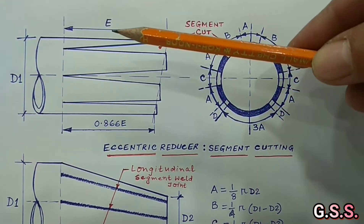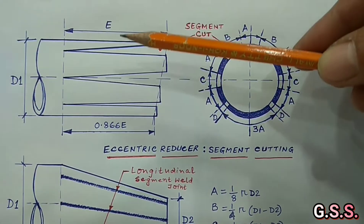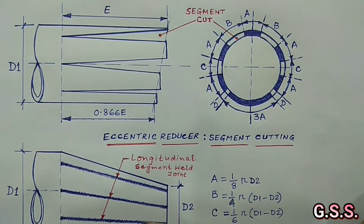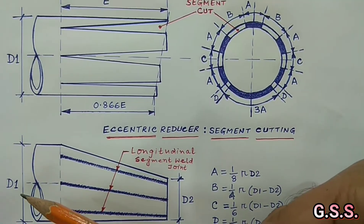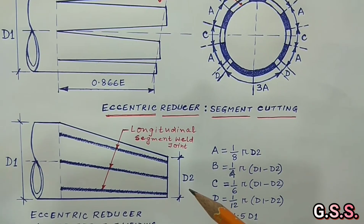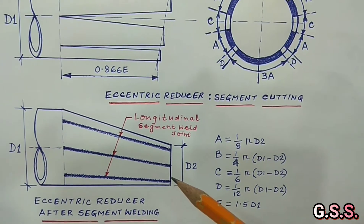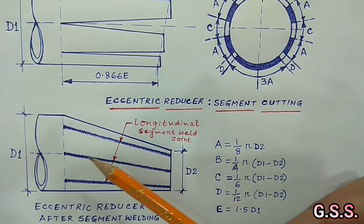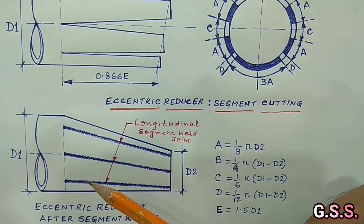After cutting the segments from the mother pipe, the uncut segments are heated and pressed to form an eccentric reducer having large end diameter D1 and small end diameter D2. Then the longitudinal joints are welded.